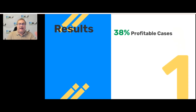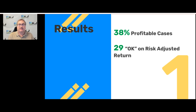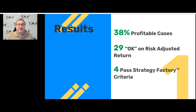Looking at the results, 38 percent of all cases I ran were profitable — pretty good, since a lot of times you get 10 percent or less. On a risk-adjusted basis, 29 percent I would consider acceptable. I always look at risk-adjusted return because if you don't have a good risk-adjusted return you're probably never going to be able to trade it successfully. Looking at my Strategy Factory criteria, there were actually four market/bar-size combinations that passed all my criteria — very encouraging, since in my first video no strategies passed.